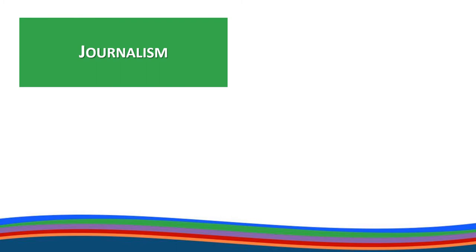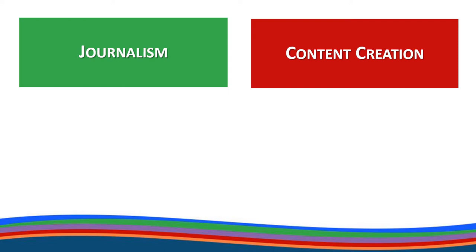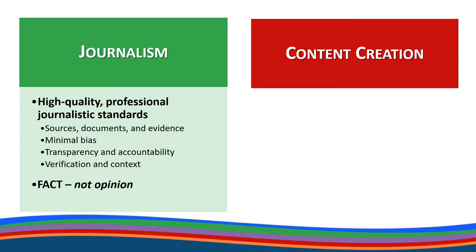Because of these constant calls of fake news, we must teach our students to identify reliable journalism, which is held to a different standard than created content. Credible journalists follow professional standards, ensuring they use reliable sources including documents and evidence. They minimize bias in their reporting. They provide transparency and accountability for their information. They can verify that information and provide context to support their reporting. Journalists deal in facts, not opinions.